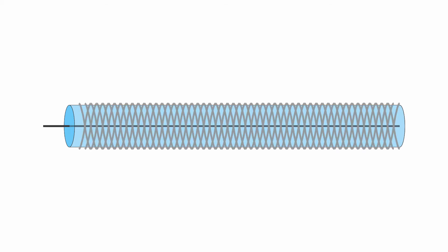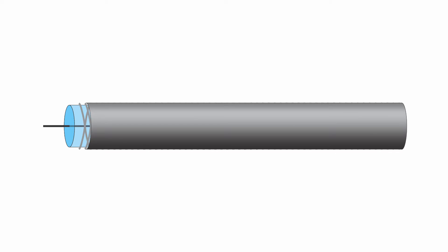A coaxial cable consists of a center conductor, an insulator surrounds the center conductor, there is a shield over the insulator, and finally a plastic jacket is put on over the shield.